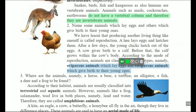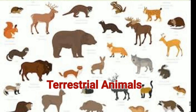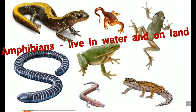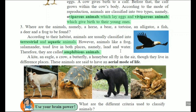Examples of viviparous animals: cows, buffalo, kangaroos, human beings, and tigers. According to their habitat, animals are usually classified into terrestrial and aquatic animals — terrestrial means living on land, aquatic means living in water. However, animals like frog, salamander, and toad live in both land and water, therefore they are called amphibious animals.